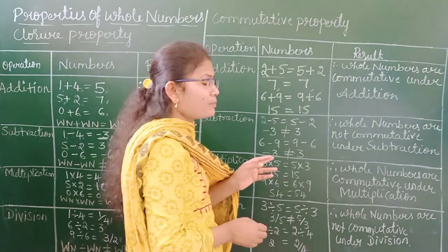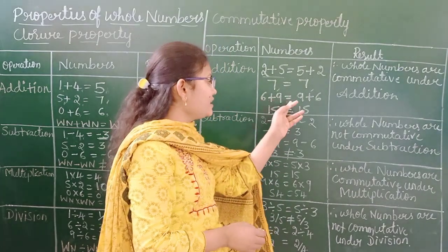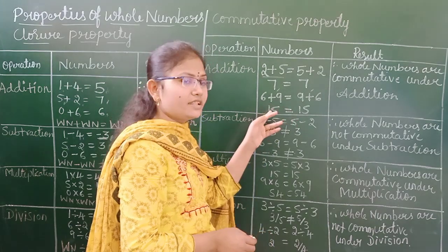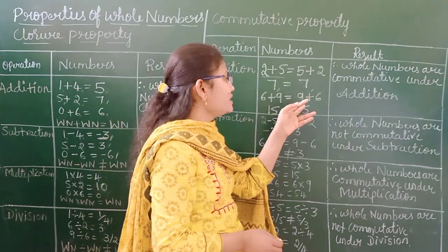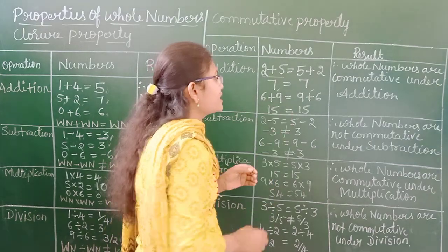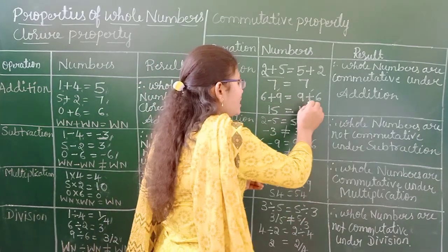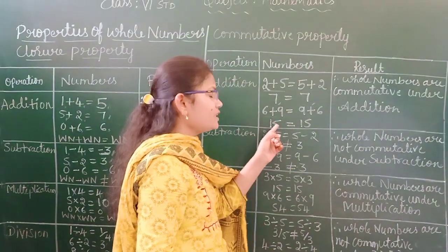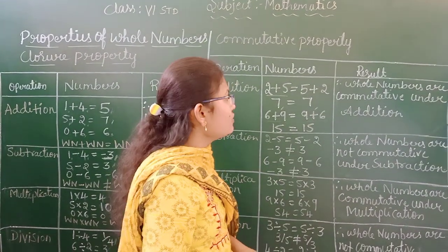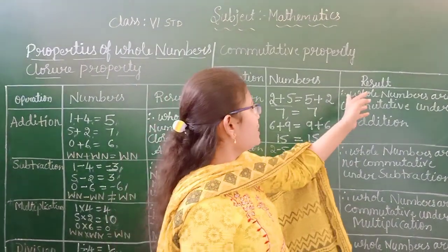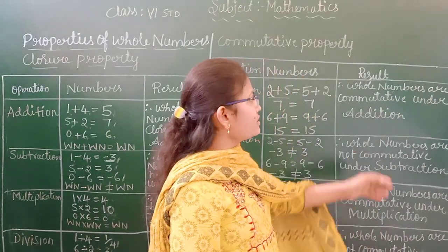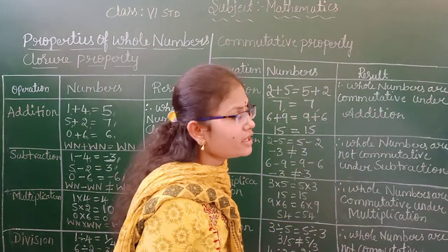Another example: 6 plus 9 equals 9 plus 6. 6 plus 9 equals 15, and 9 plus 6 equals 15. Changing the order gives equal results. So whole numbers are commutative under addition.